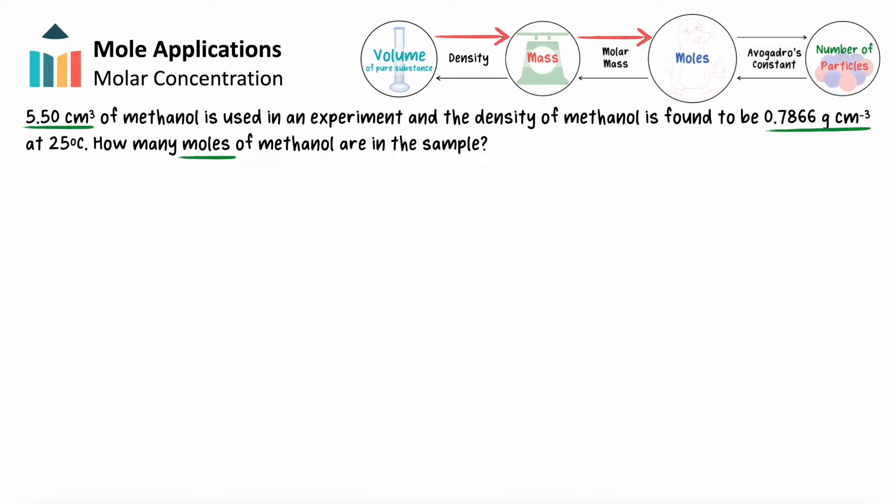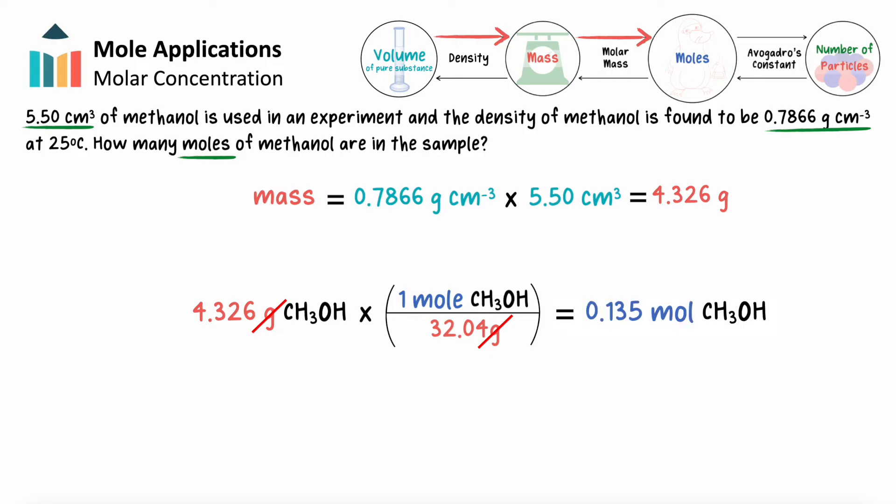With the density equation, we can plug in our known density and volume to find the mass of methanol used in our sample. The molar mass of methanol is 32.04 g per mole, meaning that 1 mole of methanol weighs 32.04 g. We'll divide our substance's mass by its molar mass to find the moles of methanol in the sample.